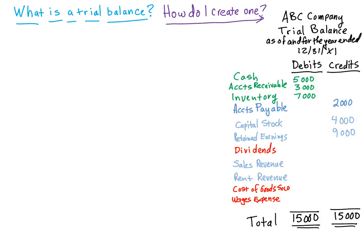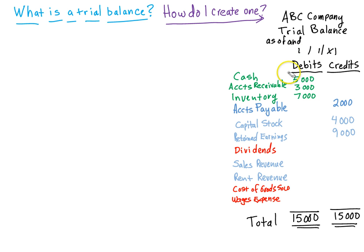I'm going to change this to be as of 1/1/X1 — so we started that date with these balances. Now we're going to talk about the expanded accounting equation, and I want you to think about accounts as a bucket. You have a cash bucket, a receivables bucket — cash comes in and cash goes out, receivables come in and they go out. For every one of these accounts, just imagine they're a bucket, and we'll talk about how we record the ins and outs.